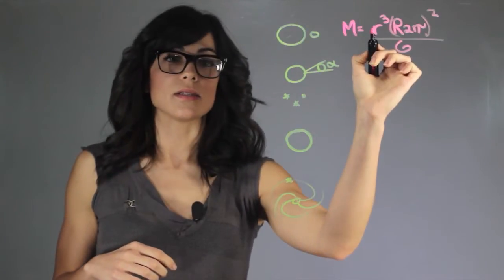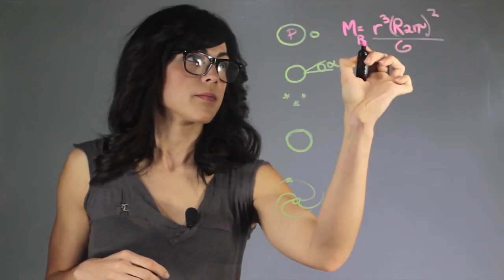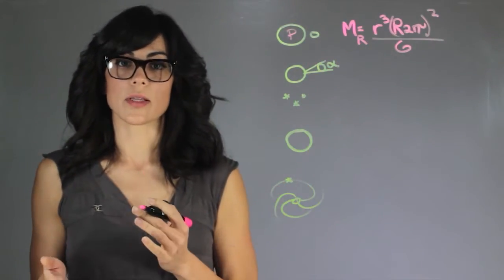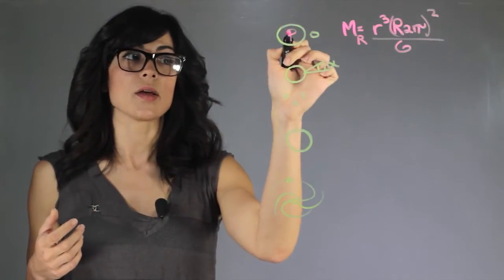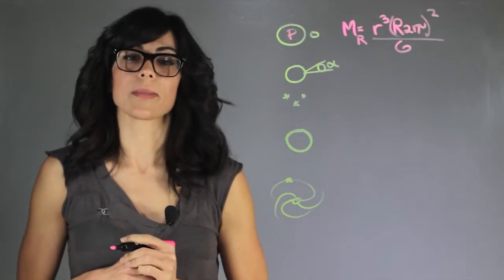And this is the distance to the moon and this is the mass of the planet. And this is going to isolate the mass and you'll be able to calculate the mass of the actual planet by just looking at the period of the moon going around the planet.